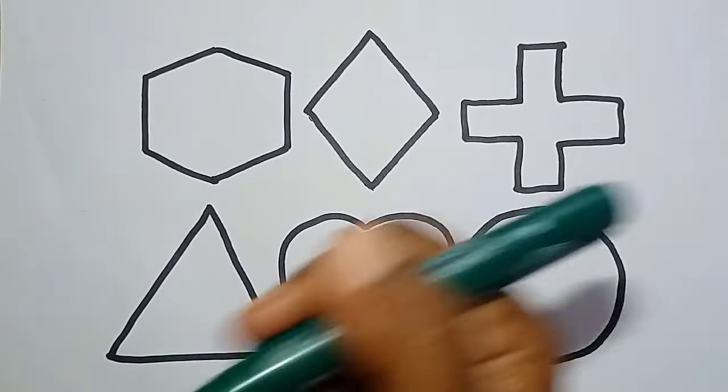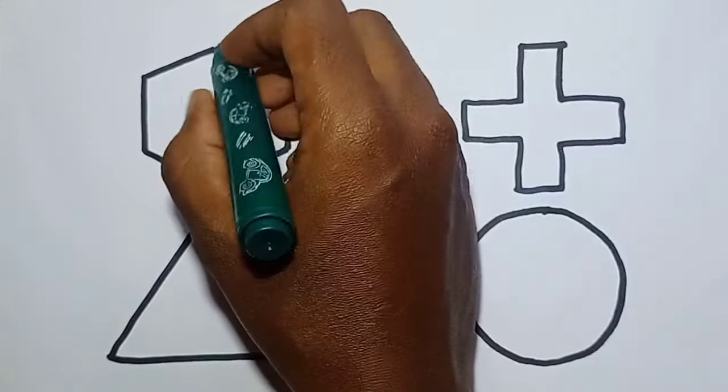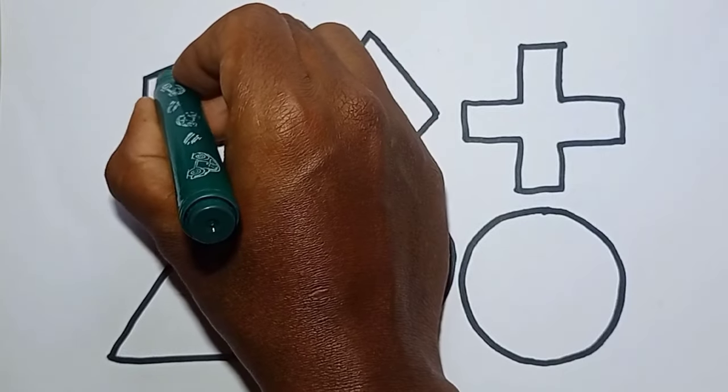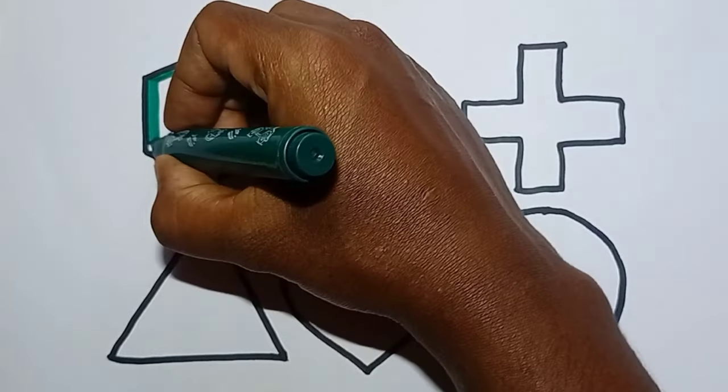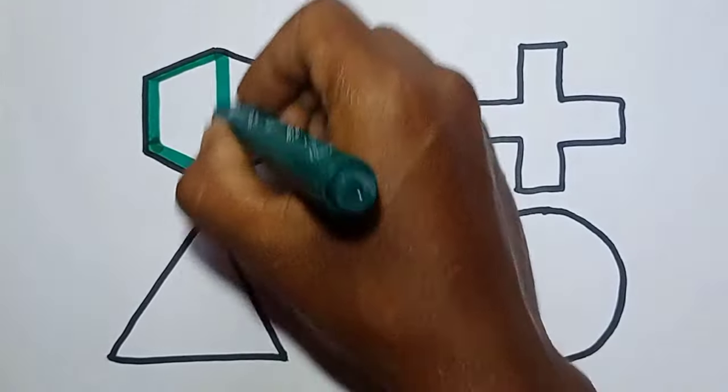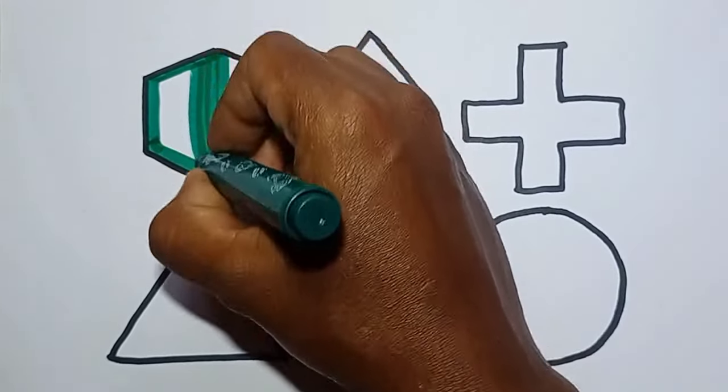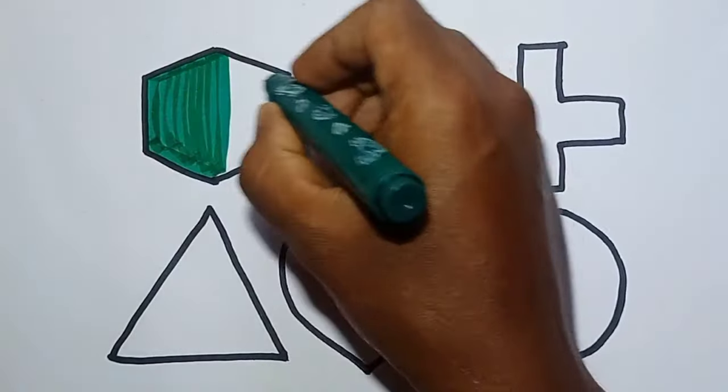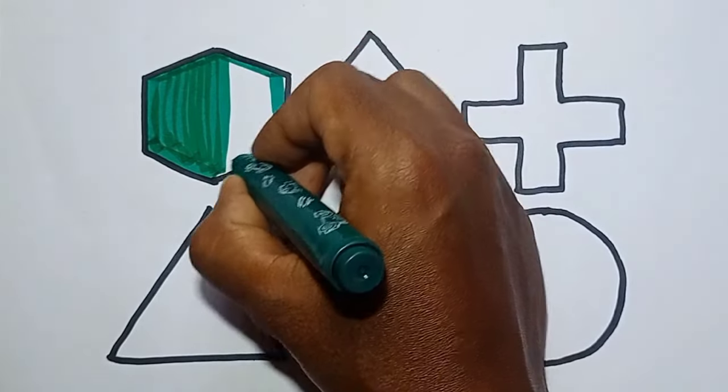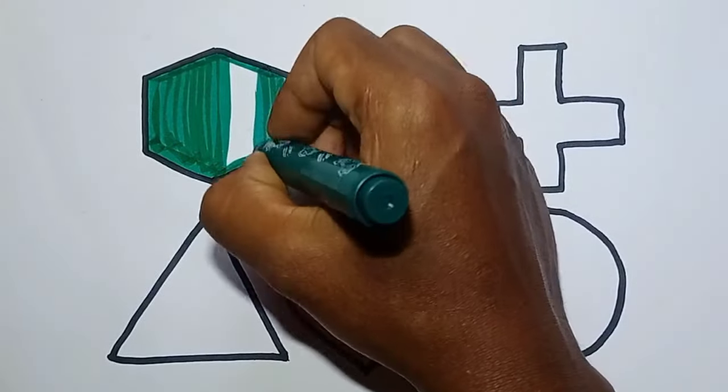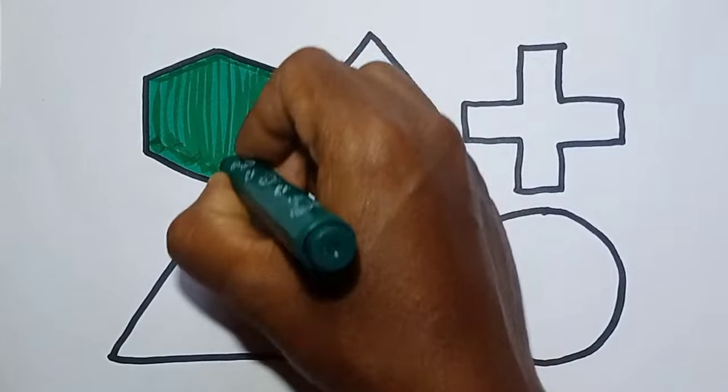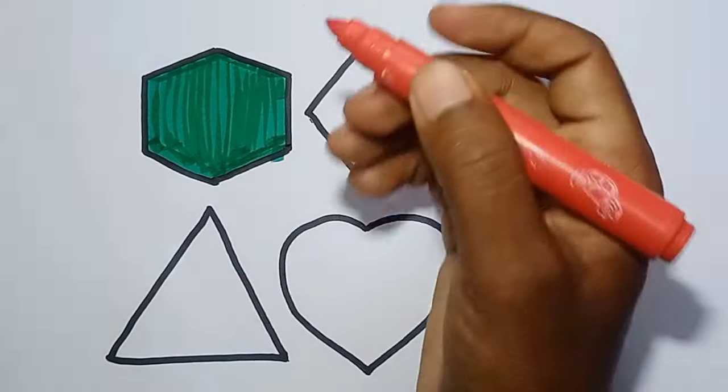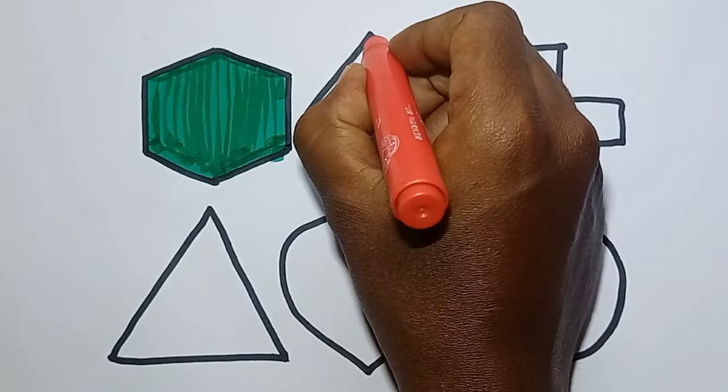Let's color in 2D shapes. This is green color hexagon. Red color rhombus.